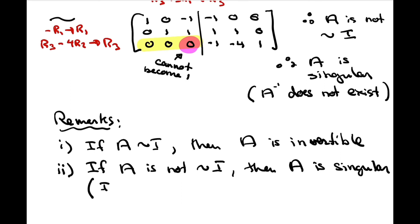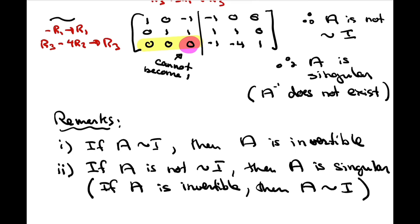Nonetheless, it is a true statement. Another way of stating it would be: if A is invertible, then A is row equivalent to I. This is actually the same statement as: if A is not row equivalent to I, then A is singular. If you think about it, these two statements are logically equivalent — they are contrapositives of each other.